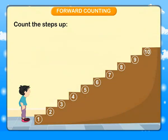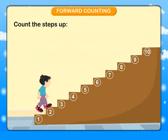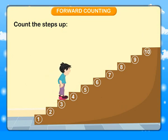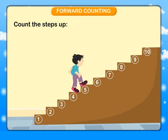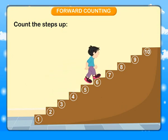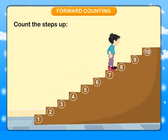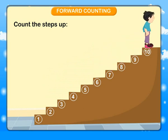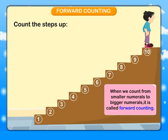Counting: 1, 2, 3, 4, 5, 6, 7, 8, 9, 10. Finish. When we count from smaller numbers to bigger numerals, it is called forward counting.